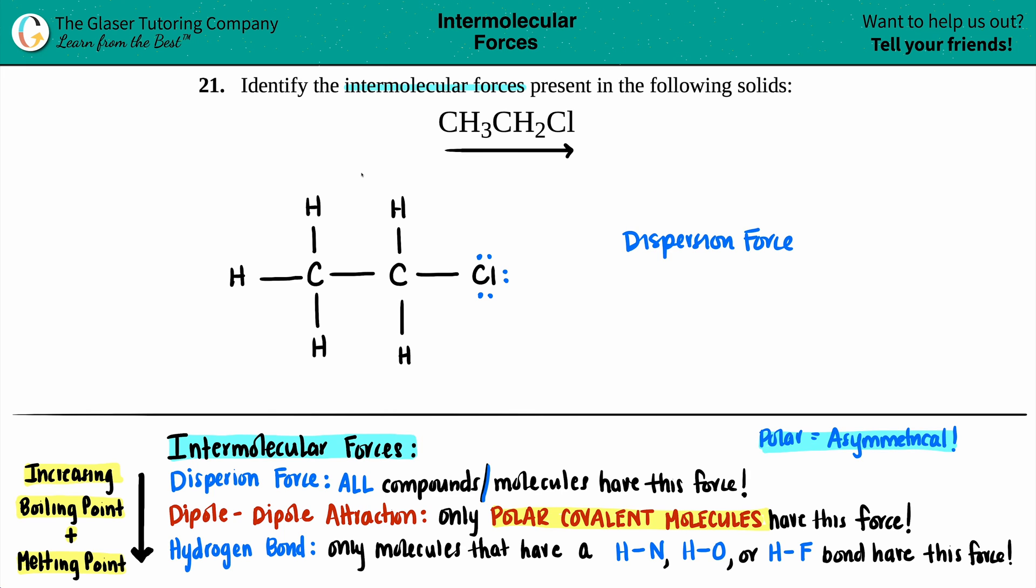So that's what I'm going to do. I'm going to take my molecule and cut it down the middle. On the left side, I have a CH3. On the right side, I have CH2Cl. That is not the same. There's no symmetry here. I have a chlorine on the left but no chlorine on the right, so because of that, this is asymmetrical and this is polar.